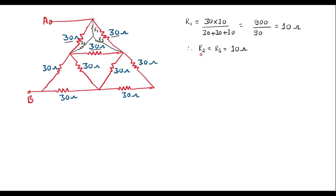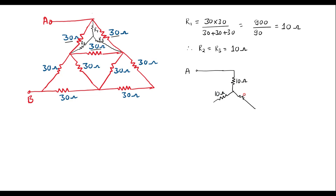So all R1, R2, R3 values are 10 ohms. Now let me draw the equivalent circuit. This is terminal A. This is R1, this is R2, and this is R3. The value of R1 is 10 ohm, R2 is 10 ohm, and R3 is 10 ohm.